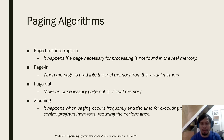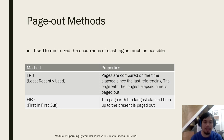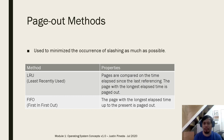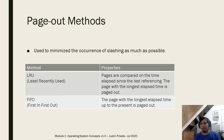For page out methods, used to minimize thrashing: the first is LRU, Least Recently Used — pages are compared on time elapsed since last referencing, and the page with the longest elapsed time is paged out. The second is FIFO, First In First Out — the page with the longest elapsed time up to the present is paged out. For more details on memory management, this will be specifically discussed in Module 3, but for now we just need to understand the concepts and how they are applied on the back end.